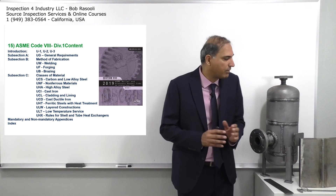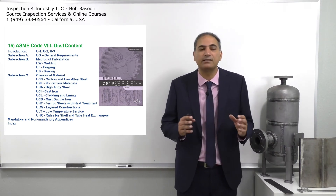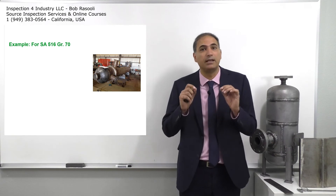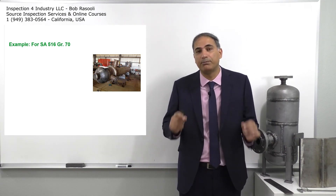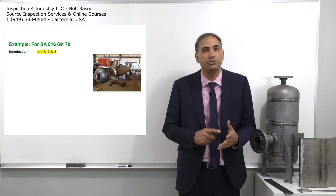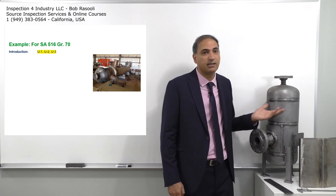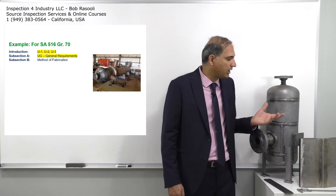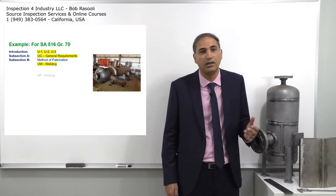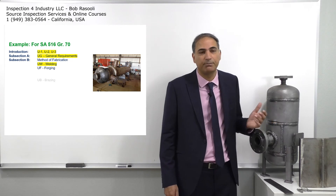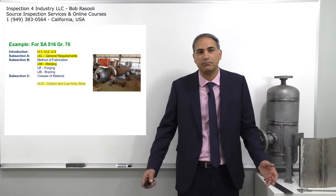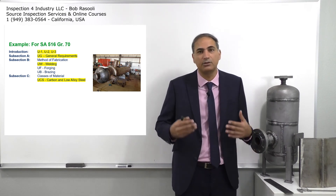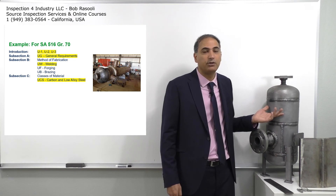Let's look at an example: a pressure vessel made of SA-516 Grade 70. Which code parts apply? First, U1, U2, U3 — the introduction sections. Then UG general requirements must be followed. For fabrication method, since it's made by welding, UW applies. Forging and brazing do not apply. For material class, SA-516 Grade 70 belongs to P-Number 1 — it's a carbon steel — so UCS applies.